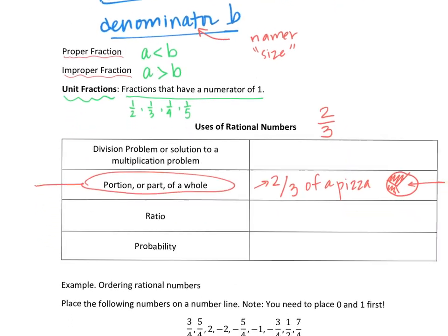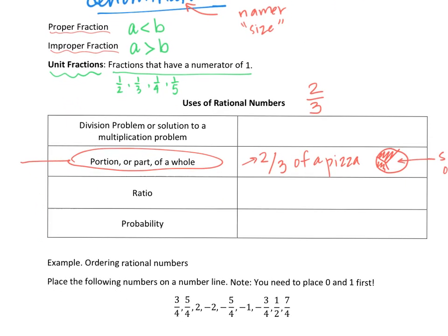Going back to the different uses of rational numbers: we've talked about parts of a whole, but we also encounter them when solving a problem like 3x = 2. There's no whole number or integer that satisfies that, but dividing both sides by 3 gives x = 2/3, so rational numbers help us solve multiplication equations.